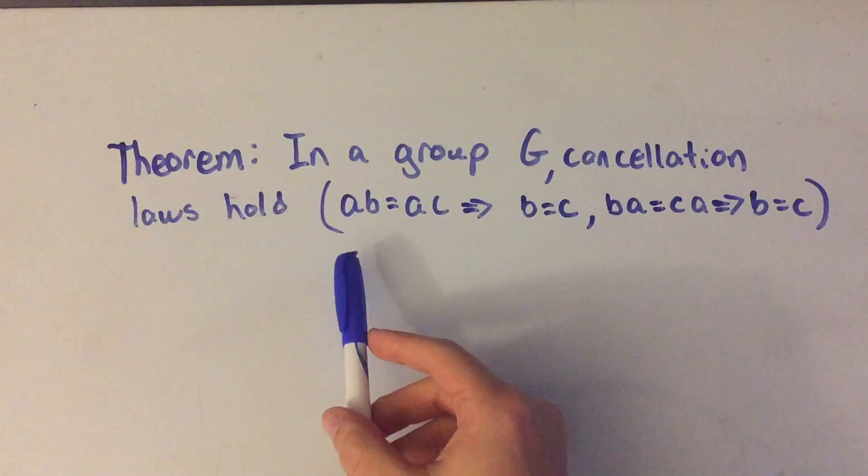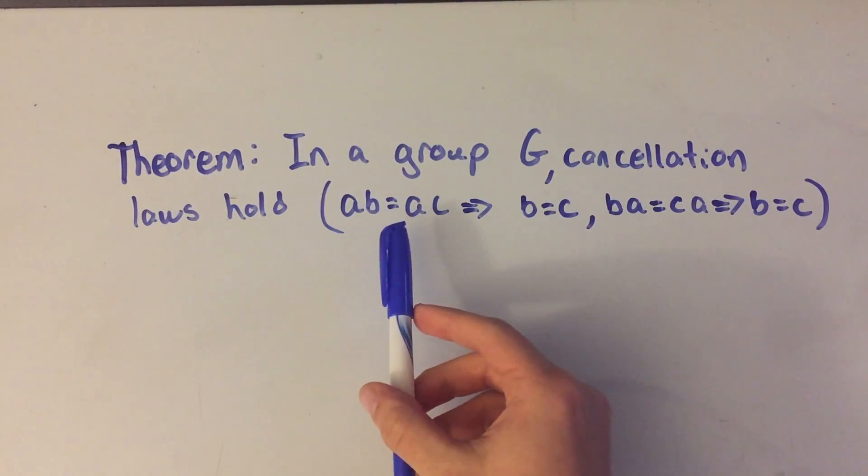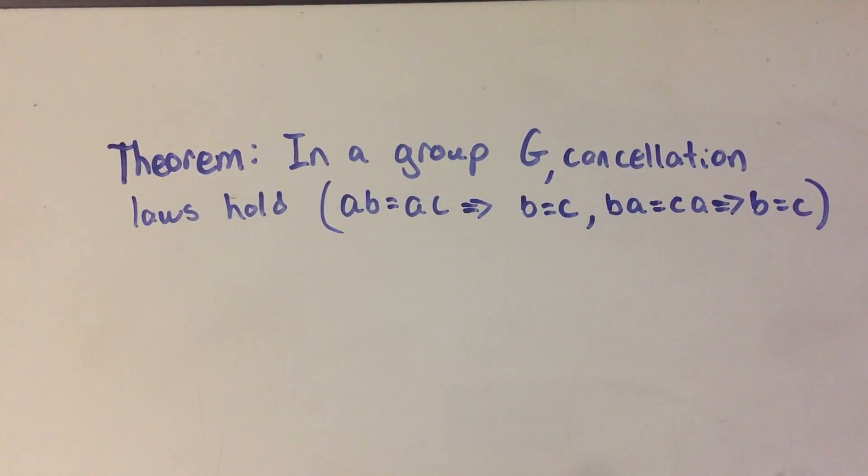So what that means is that if I have a times b is a times c, b equals c. I can just cancel the a's on the left and vice versa. If I have b times a equals c times a, I can cancel the a's on the right and get b equals c.